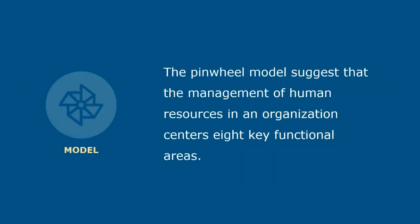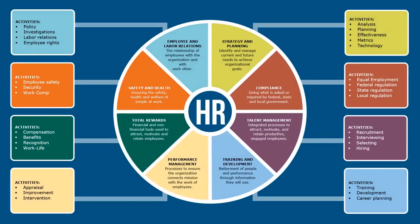Now let's explore a simple human resource management model. The pinwheel model suggests that the management of human resources in an organization centers on eight key functional areas. These functions are a collection of specialized human resource management work. For each functional area, human resource professionals are responsible for key activities, which you can see in the boxes around the model.